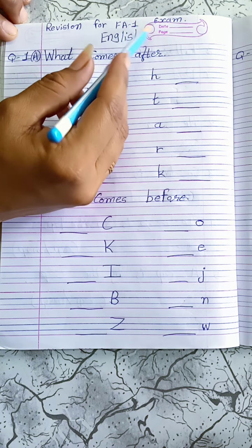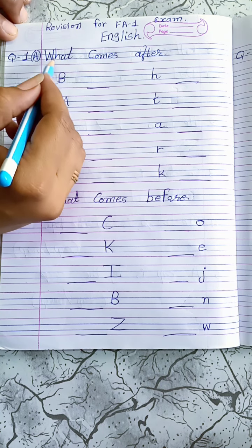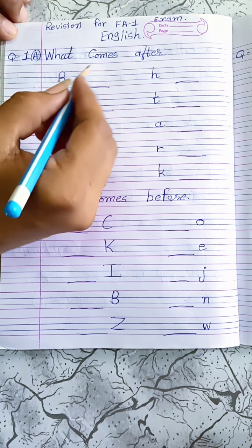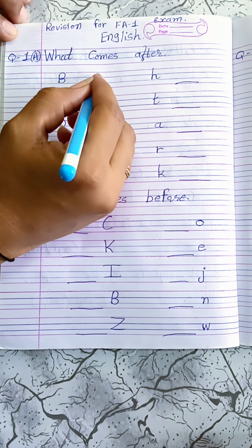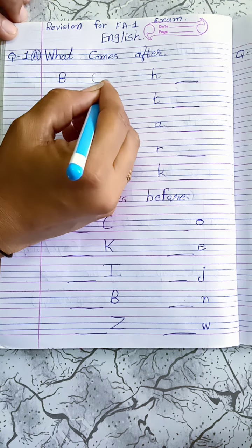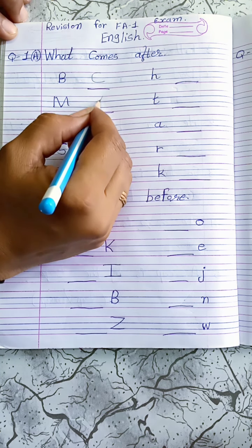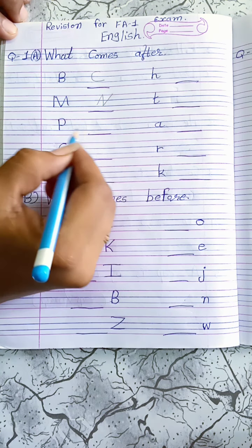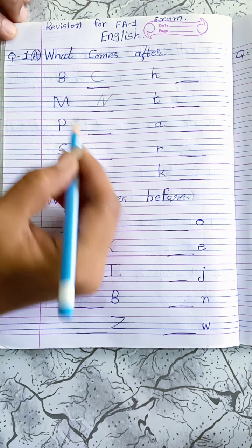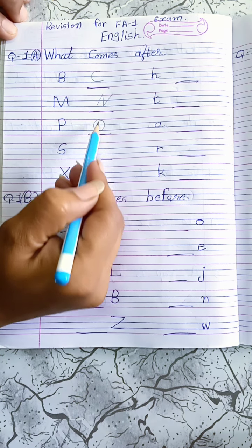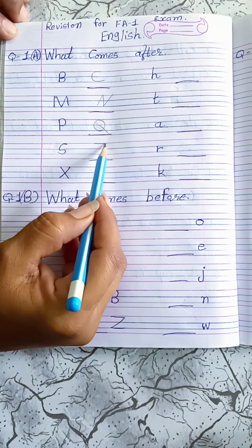Revision for FA1 English. Question 1: What comes after? What comes after B? C. What comes after M? N. What comes after P? Q. What comes after S? T.